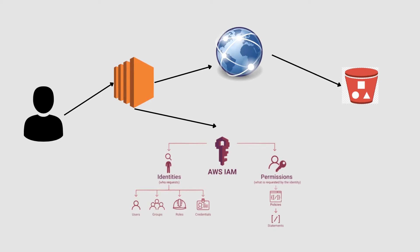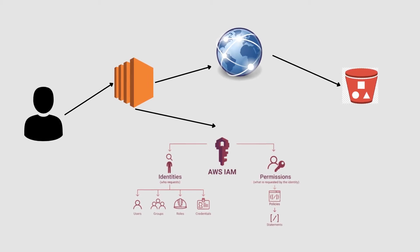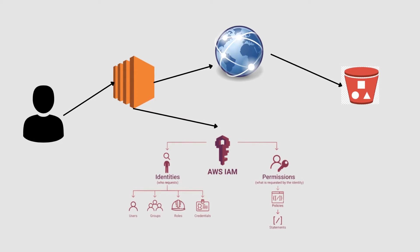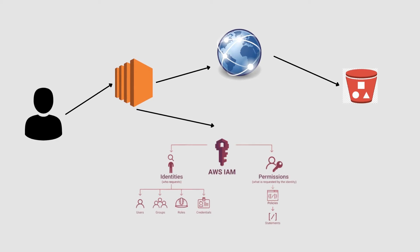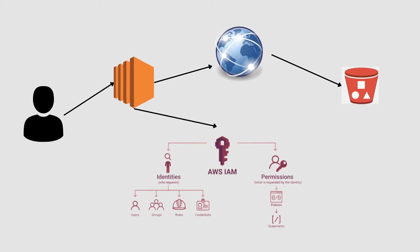In this diagram you can see there is a user who is going to log into the EC2 machine. This EC2 machine is configured with an IAM user, and that IAM user has S3 full access. With the help of internet connectivity, we are going to connect this EC2 machine with the S3 bucket and transfer the file. So without wasting more time, let's start with the demo.